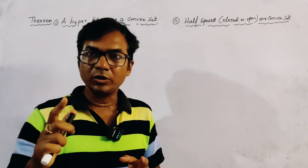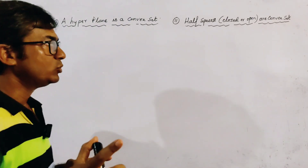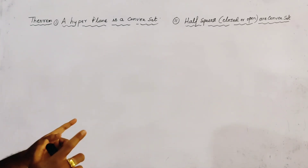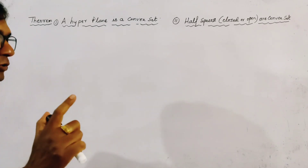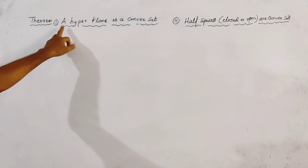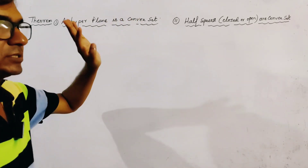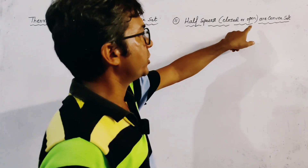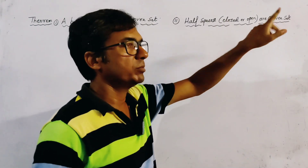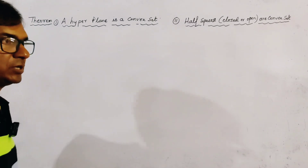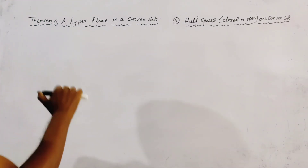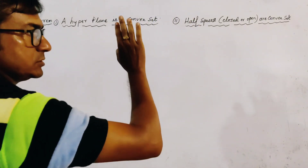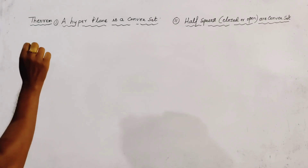In this lecture, we are going to discuss the proof of two important theorems of linear programming problems relating to convex sets. The two theorems are: the first theorem is a hyperplane is a convex set, and the second theorem is that half spaces — closed half space or open half space — are both convex sets. Before proving these two theorems, we will define hyperplane and half space.